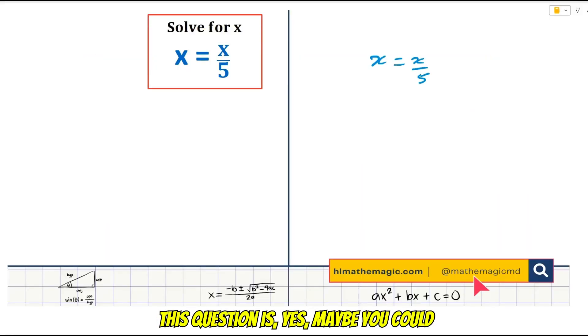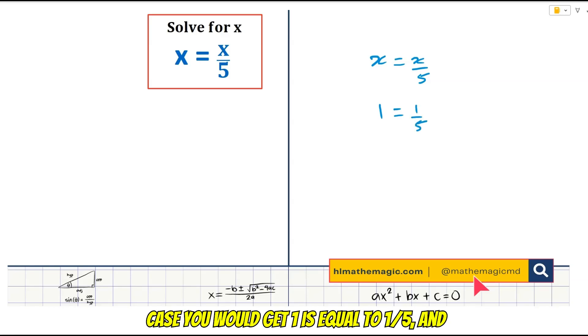So the first thing to think about with this question is, yes, maybe you could cross out x from both sides, in which case you would get 1 is equal to 1 fifth, and that's a bit of a problem.